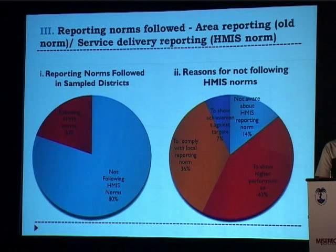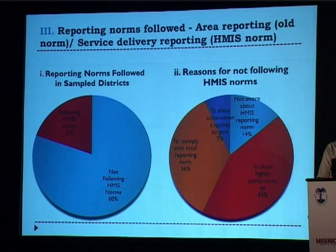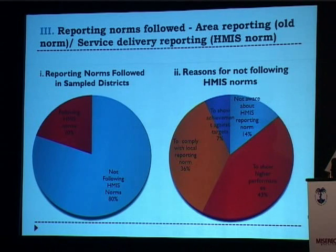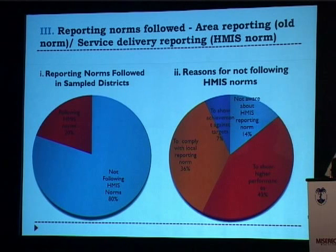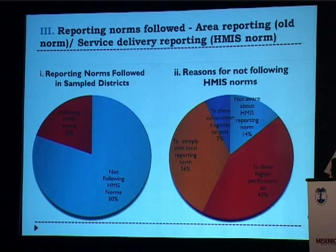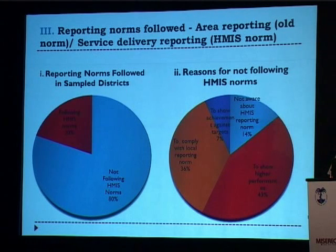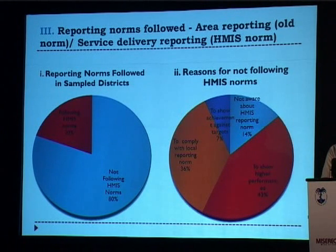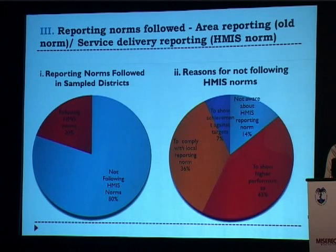Looking at reporting norms, only 20% of districts followed the HMIS reporting norm diligently during the study period. In 80% of districts, either area-based reporting was done across the entire system or for some data elements. The reasons were varied: in some districts like Uttar Pradesh, all reporting is area-based; in some districts, facilities report area-wise to show higher achievements against targets; and in some places, HMIS users were not aware about the reporting requirements — they were not trained adequately.